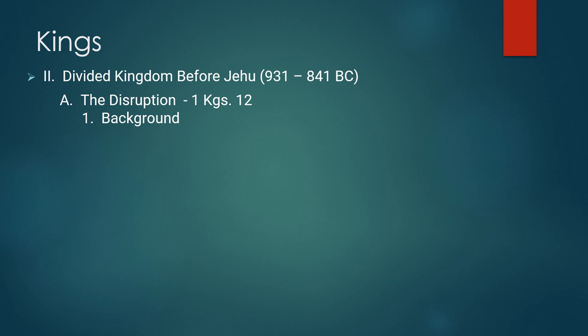That brings us to Roman numeral 2 on the outlines — the divided kingdom before Jehu. The kingdom divided in 931 BC. The revolution of Jehu, where he wiped out the house of Ahab, is 841 BC, so it's approximately a 100-year period, 931 to 841 BC. Capital A is the disruption, and number 1 under that is background.